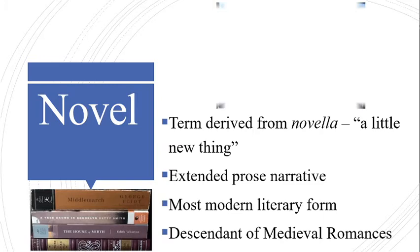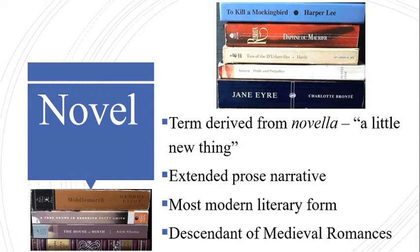There are various types of novels like historical novels, sentimental novels, picaresque novels, epistolary novels, and so on. The novel has undergone many changes and developments over the years. Studying the history of the novel reveals the evolution of different forms of this genre. It is considered the most modern of all literary forms — an extended prose narrative — and the term is derived from 'novella,' which means 'a little new thing.'